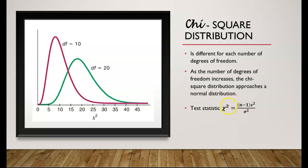The test statistic chi-square can be found by the formula: n minus 1, times the standard deviation of the sample squared, divided by the standard deviation of the population squared. We are going to be using Table A4 in StatCrunch to find the critical value chi-square.